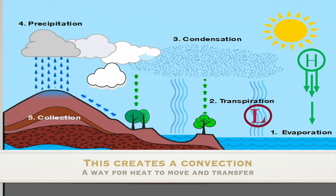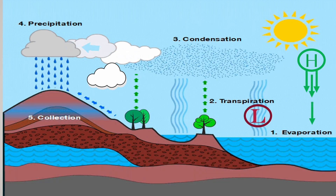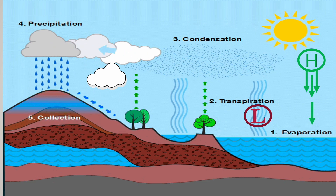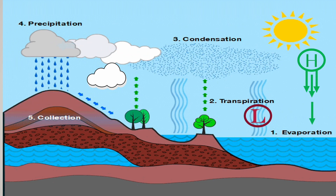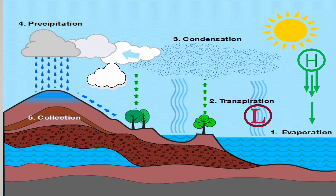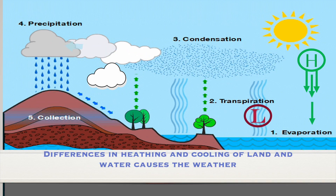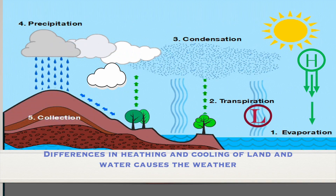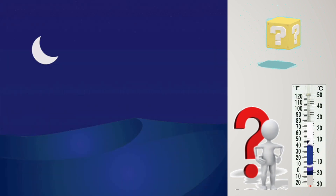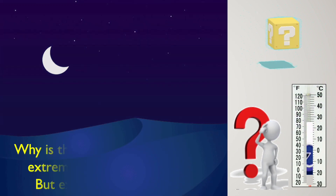These pressure differentials are what we popularly refer to as low and high pressure areas. Wind blows toward the low pressure area and the air rises in the atmosphere where they meet. As the air rises, the water vapor in it condenses, forming clouds and sometimes precipitation. In summary, differential heating and cooling of land and water causes the weather.